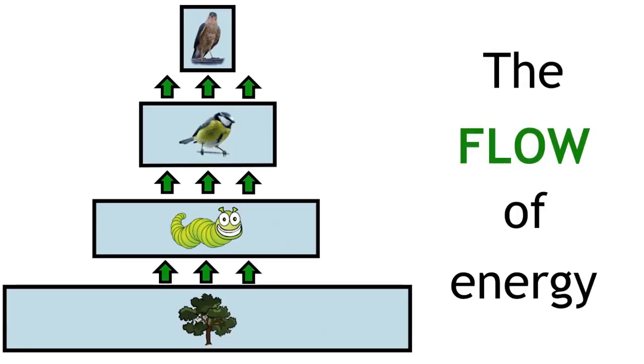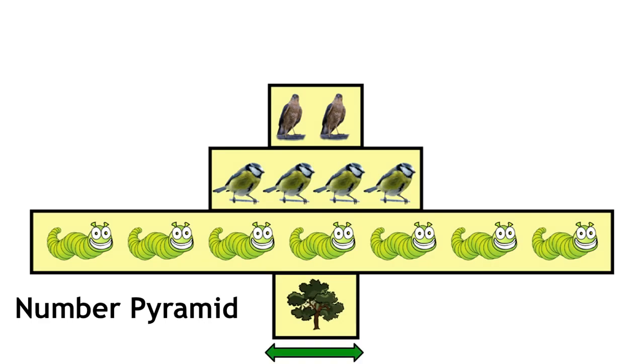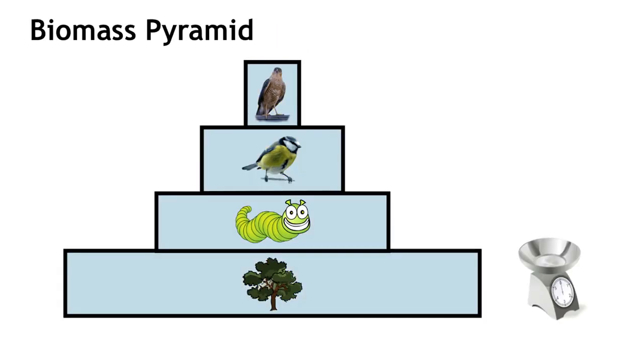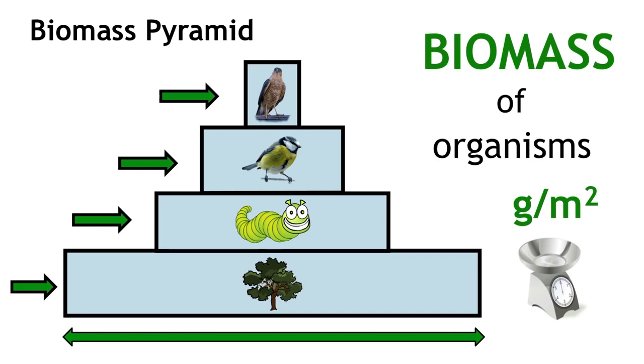The width of the bar in the number pyramids represents the number of organisms in that trophic level. The width of the bar in biomass pyramids represents the biomass of the organisms in that trophic level.